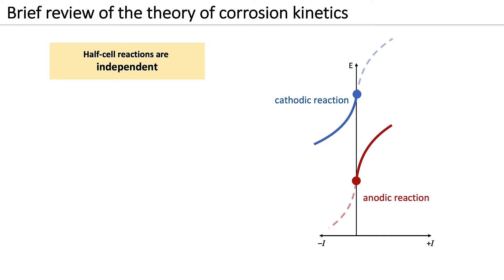This system tends to stabilize at the corrosion potential E-corr, which is the potential where the cathodic and anodic reactions occur at the same rate. Note that at E-corr, the current of both the anodic and cathodic reactions are equal to the corrosion current I-corr.